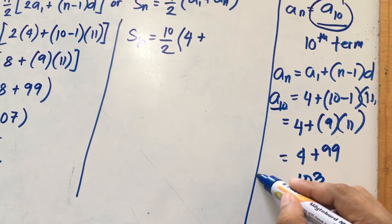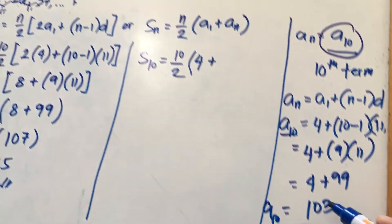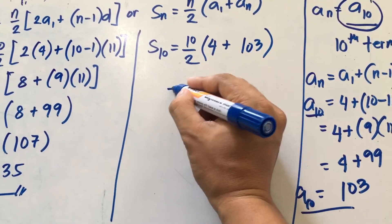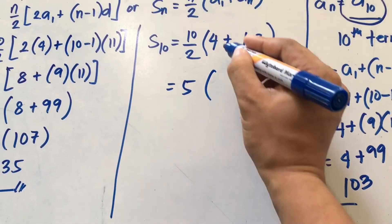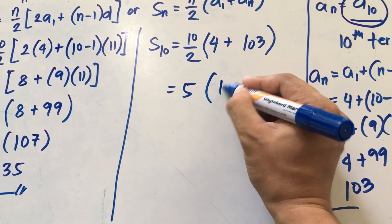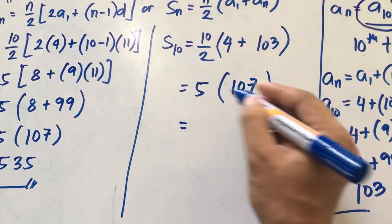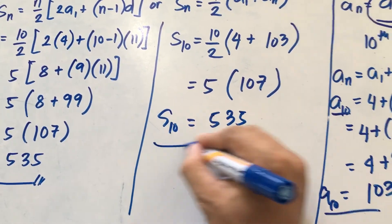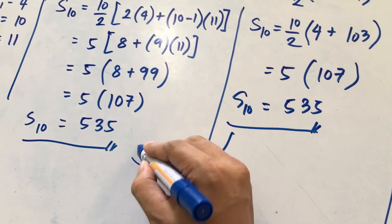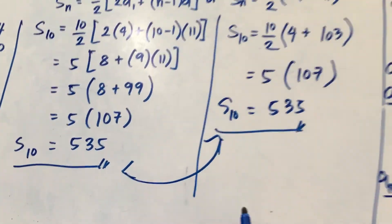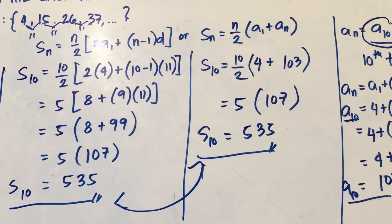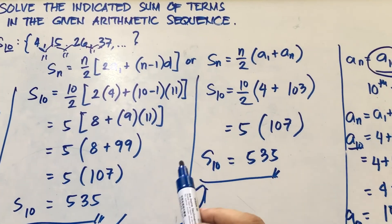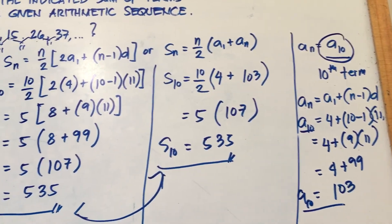So put 103 here as A sub 10. Now 10 over 2 simplifies to 5. Then 4 plus 103 equals 107. So 5 times 107 equals 535. If you observe, we still arrive at the same answer, which is 535. It depends on you which specific formula between the two that you will use in solving for the arithmetic series.